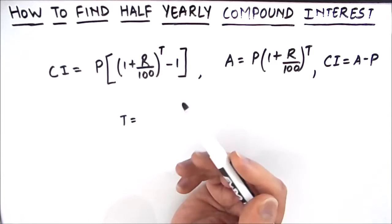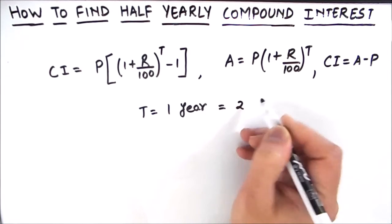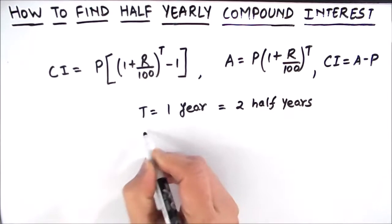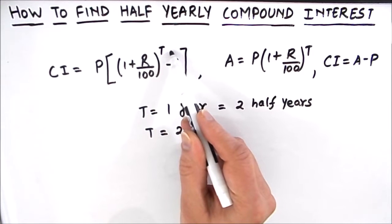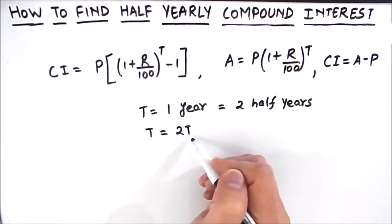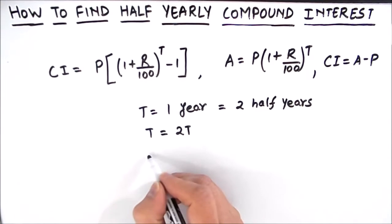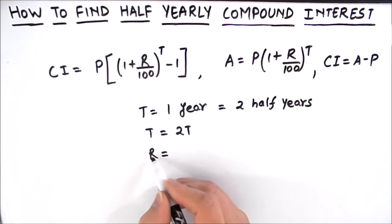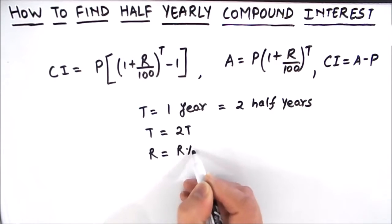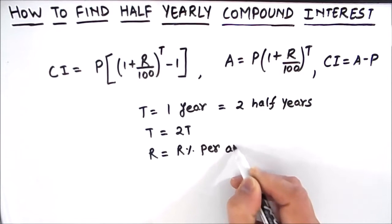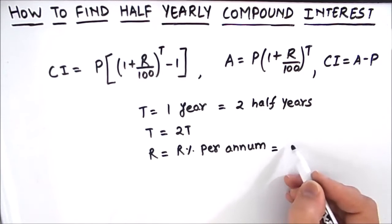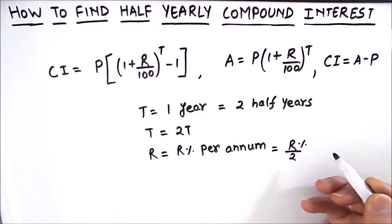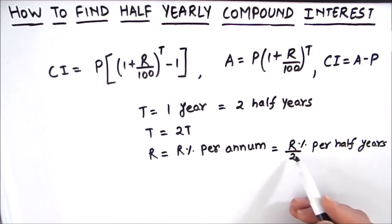In this formula the time is in years, and one year equals two half years. So the time period will become 2t — whatever t is given in the question, we just multiply by two. Another change we need to make is to the rate of interest, because rate is given per annum, meaning per year. Since there are two half years in a year, the rate will be r divided by 2 per half year. These are the two changes we need to make in the formula for finding the half-yearly compound interest.